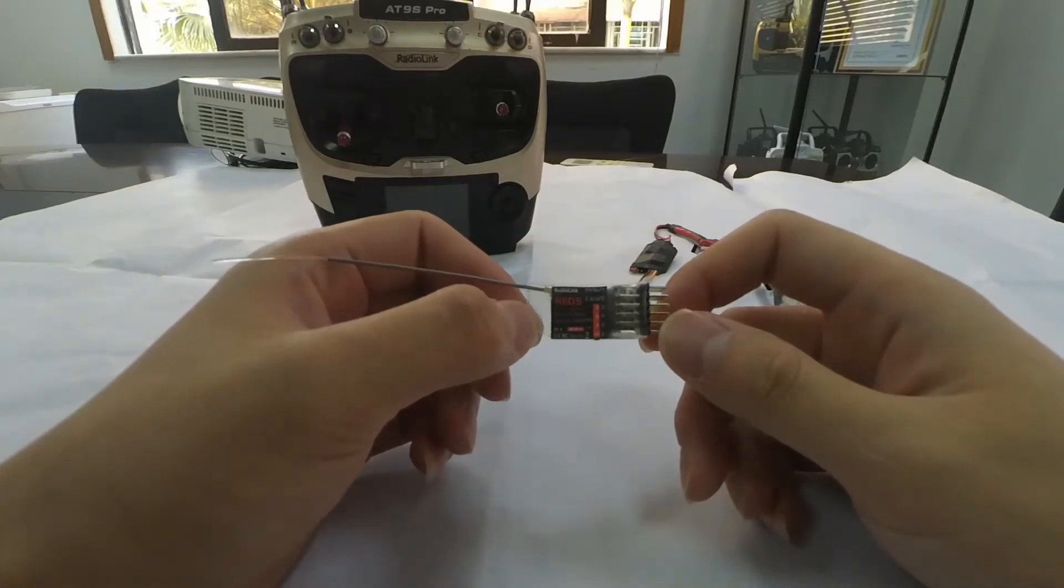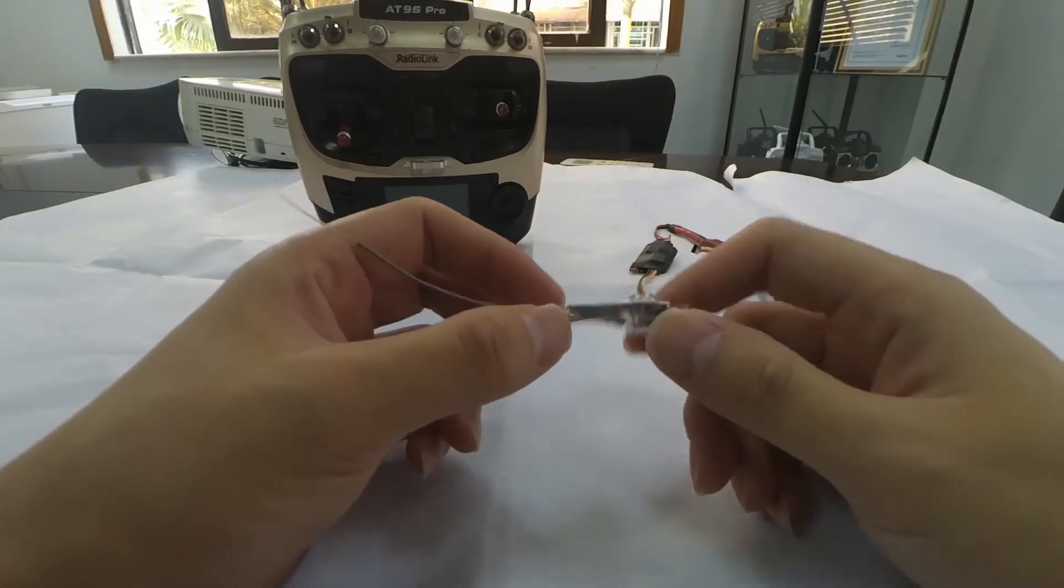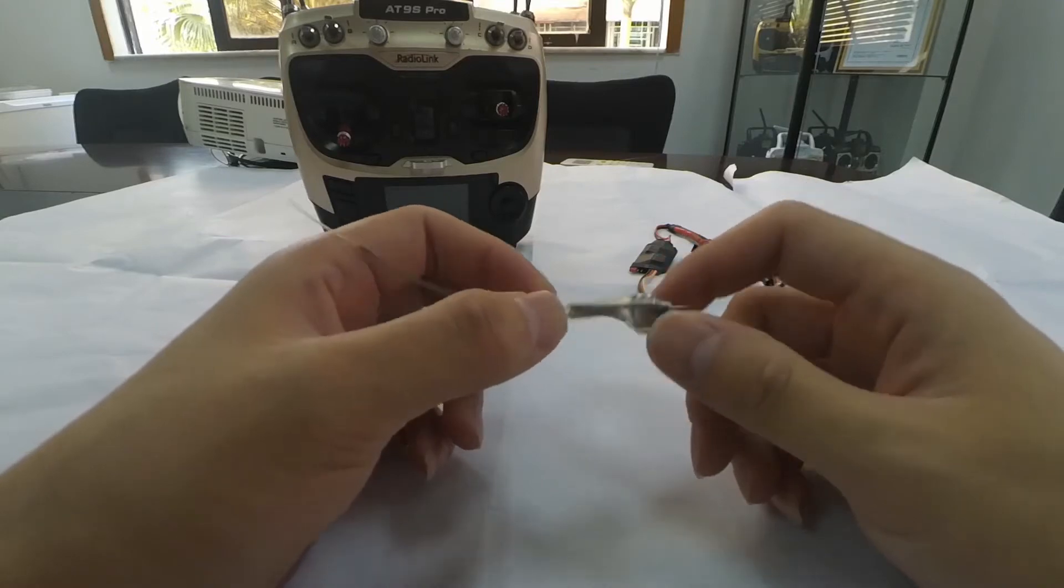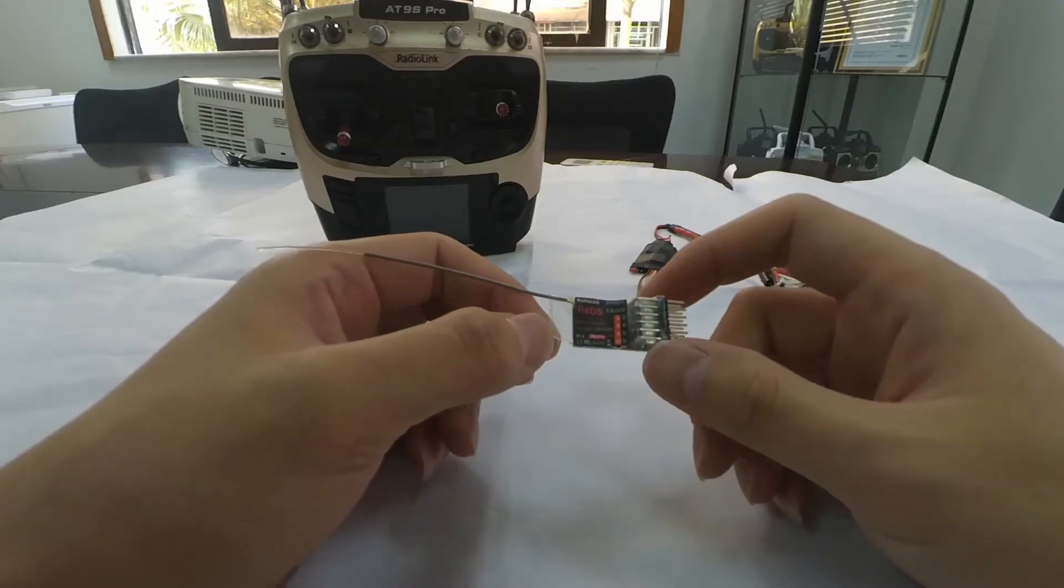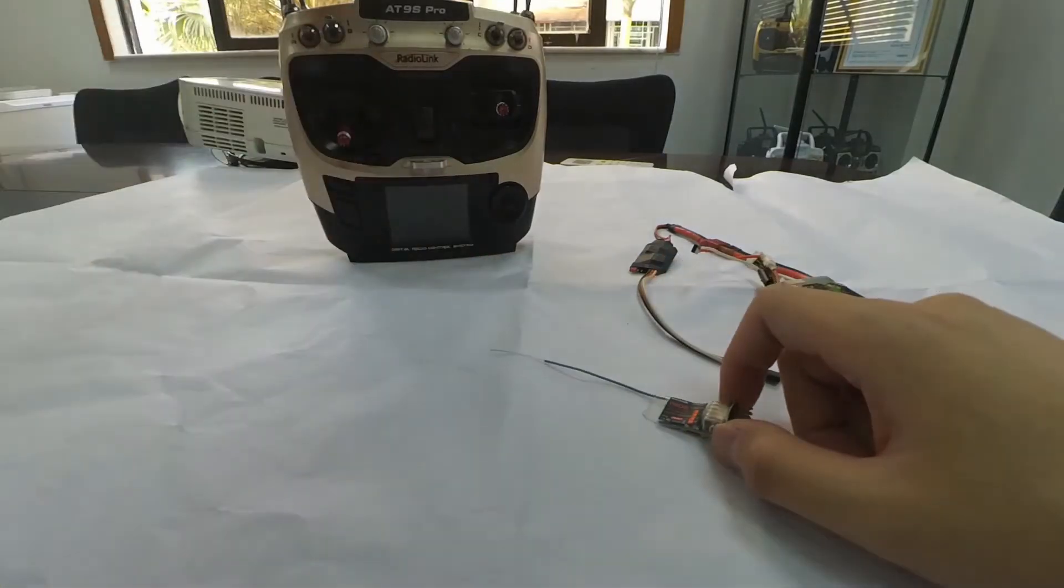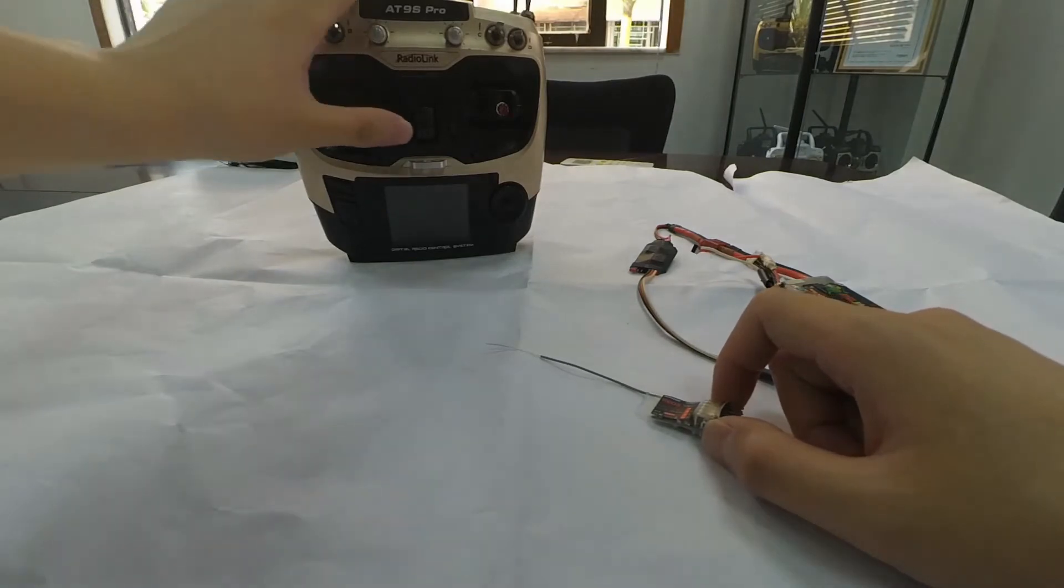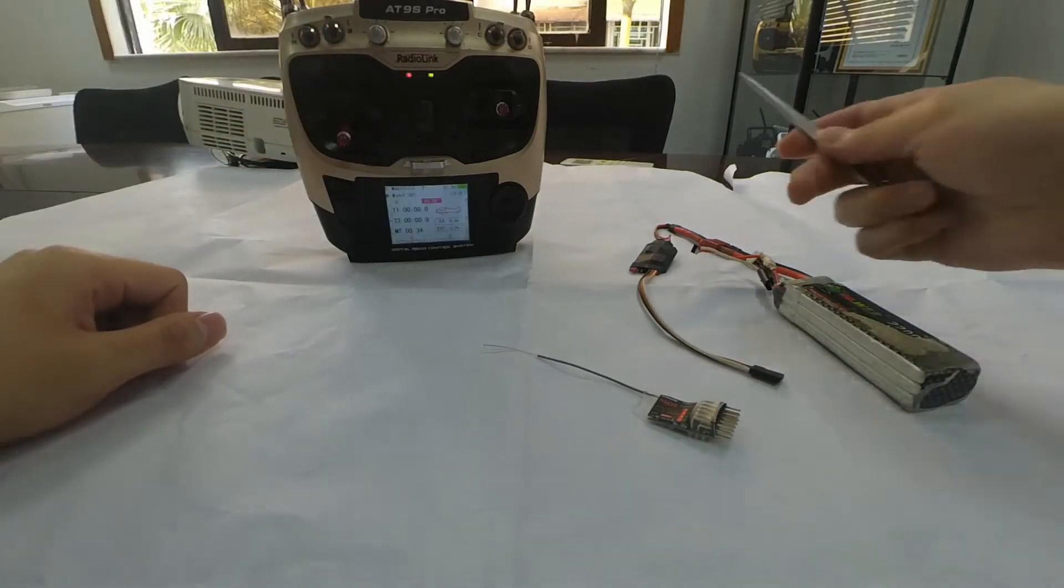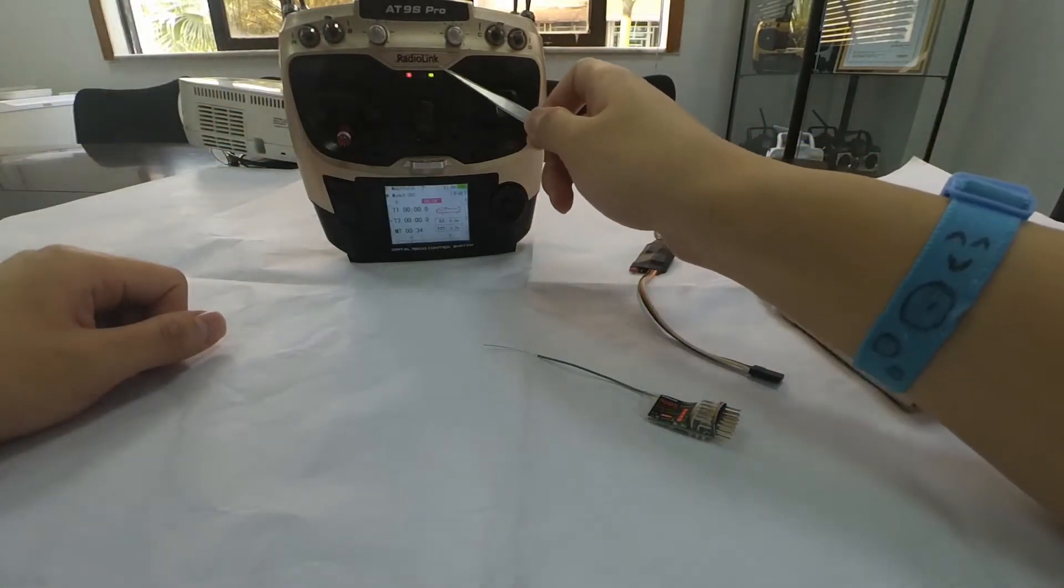R60S is a receiver with 10 channels. Now I'm going to show you how to do the binding and how to change signal output. Let's take 89S as an example. Power on the transmitter and check if the green LED is always on.